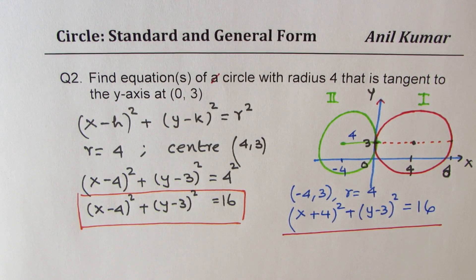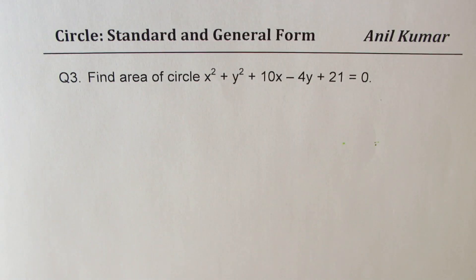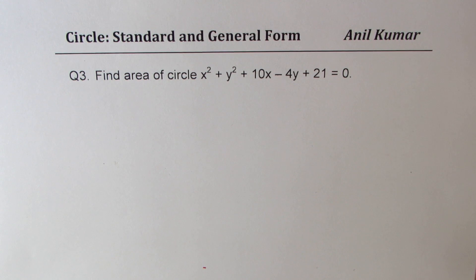So that is how we get both equations. With the given conditions we get two equations of the circle. Now let's move on to the last question, which is a very interesting one — question number 3: find the area of the circle x² + y² + 10x - 4y + 21 = 0.